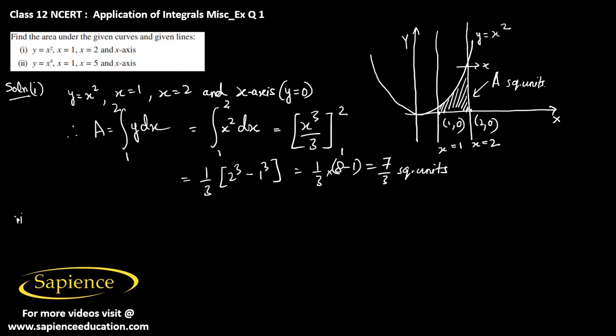So answer is 7 by 3 square units. Then in the second part it is given y equals x power 4, and x equals 1, and x equals 5, and x-axis, x-axis means y equals 0. Now we can again draw similarly the graph of y equals x power 4, also like this approximately.